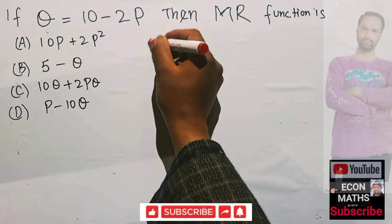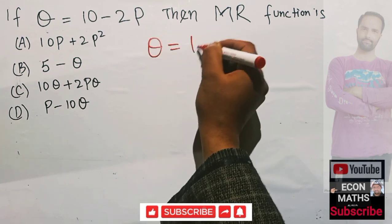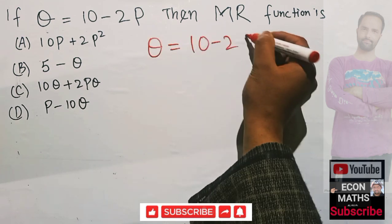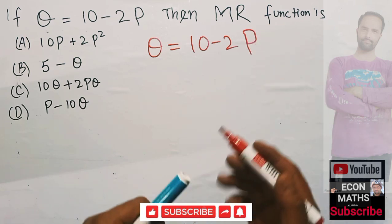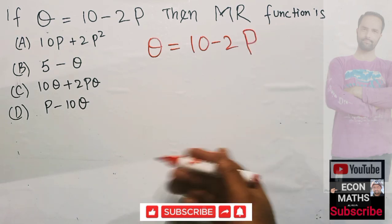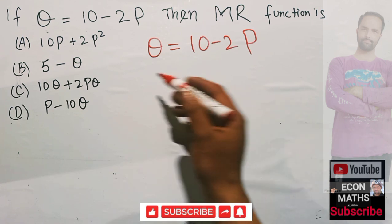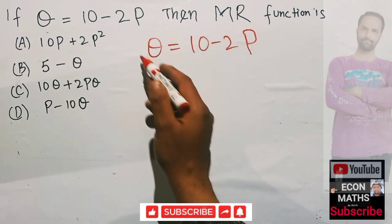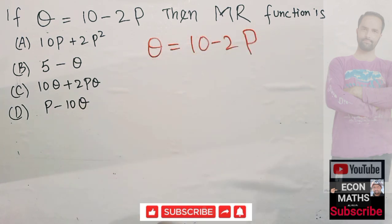given that the demand function is Q equals 10 minus 2P. The first step will be to find the inverse demand function. By inverse demand function, we mean to solve this function for P.